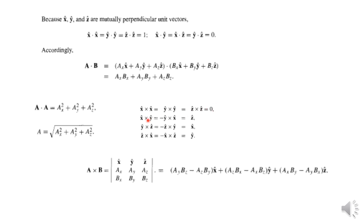But x̂ × ŷ = ẑ, which equals −(ŷ × x̂). Similarly, ŷ × ẑ = x̂ and ẑ × x̂ = ŷ. In component form, the cross product A × B can be written as the determinant with rows [x̂, ŷ, ẑ], [ax, ay, az], [bx, by, bz].